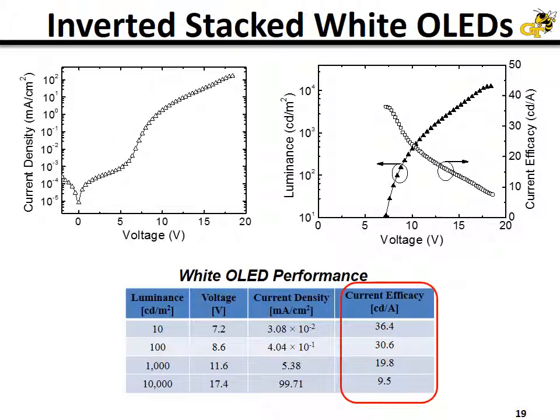Here's the performance of these devices. The J-V curve is shown on the left, and luminance versus voltage and current efficacy curves are shown in the upper right. I'd like to draw your attention to the table below, with a current efficacy value of about 30 candela per amp at 100 candela per meter squared.